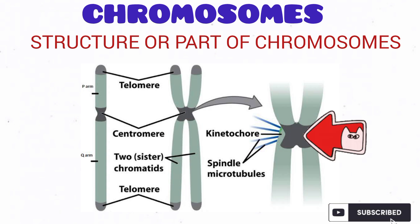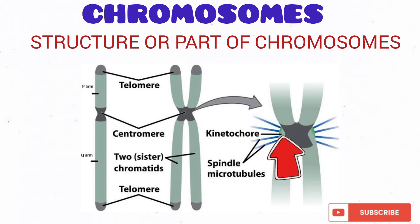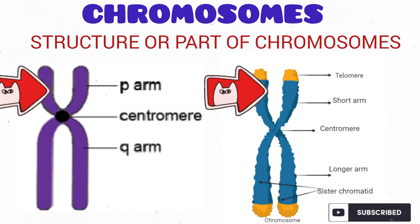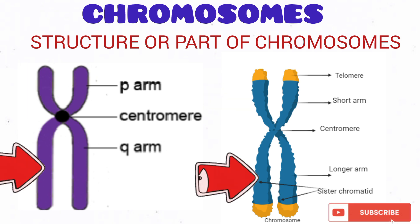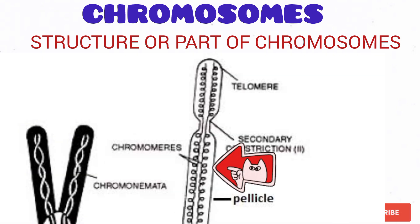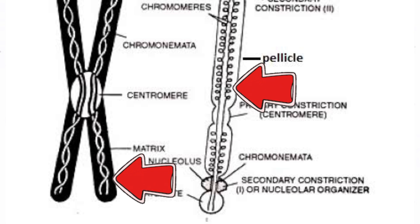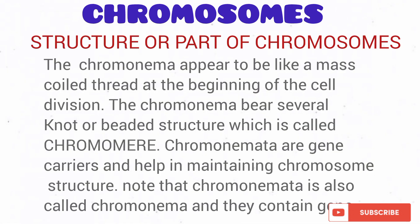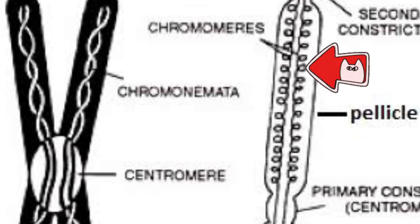It should be noted that the centromere is also called the primary constriction, while the kinetochore are proteins assembled on the centromere during cell division. The centromere divides the chromosome into two arms. The shorter arm is regarded as the P arm on top and the longer arm is regarded as the Q arm. You can see the pellicle which covers and protects the chromosome. You can also see the matrix which is a gel-like substance. Then you can also see the chromomere — an aggregate of chromomeres makes up the chromomere matter. Note that the chromomere contains genes.